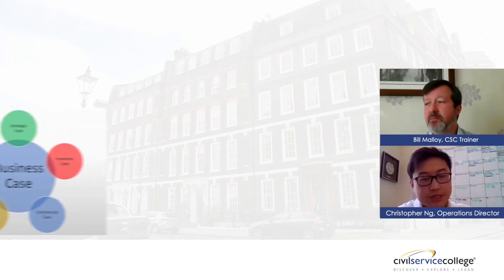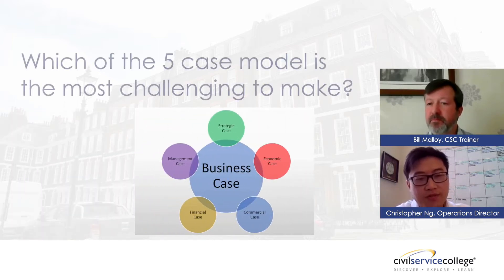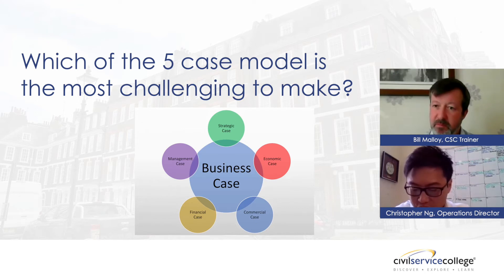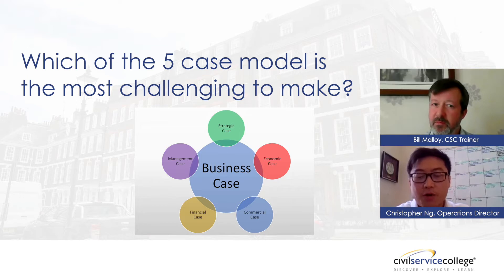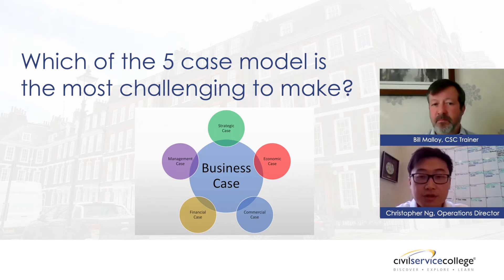There's one question: out of the five cases, which case do people often find the most difficult, or where do you often find that they don't have the right evidence or have the optimism bias?